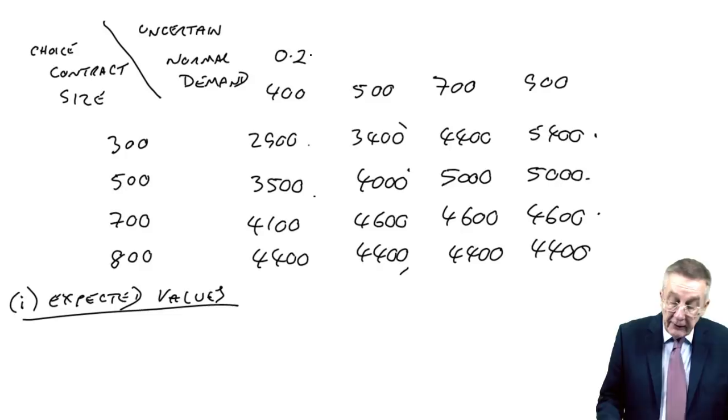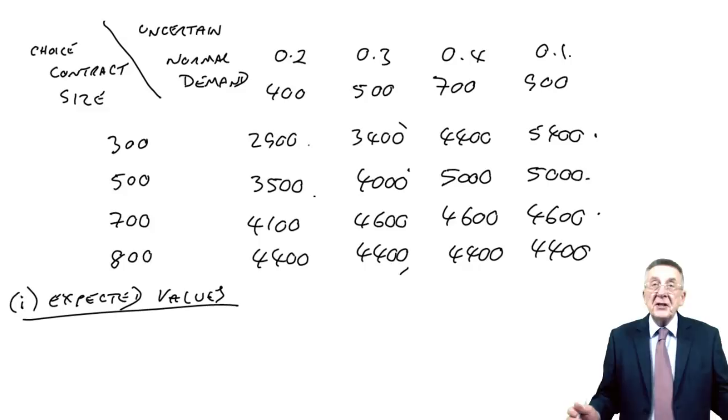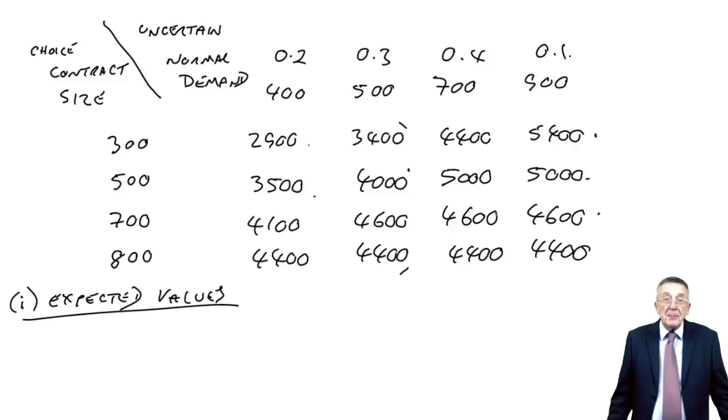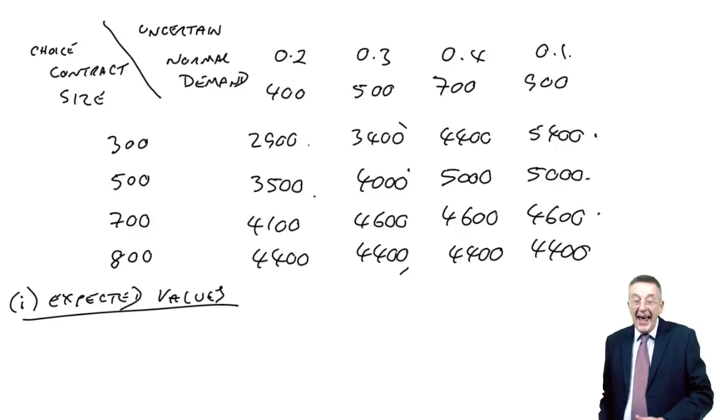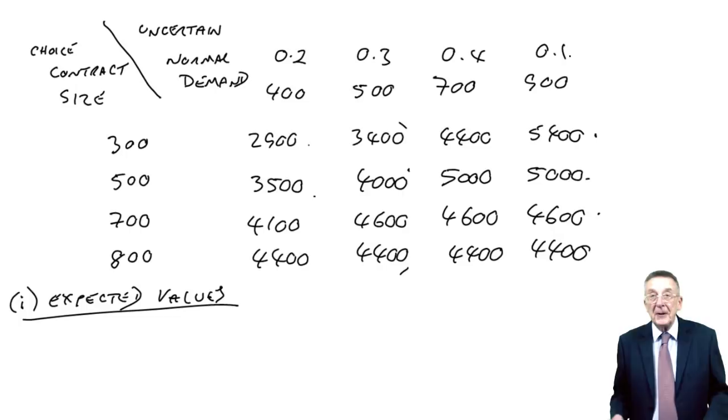If you look back at the question itself, normal demand might be 400. The probability is 0.2, of it being 500 is 0.3, 0.4, 0.1. And don't be scared, some people get very scared about probabilities, but this bit isn't scary.